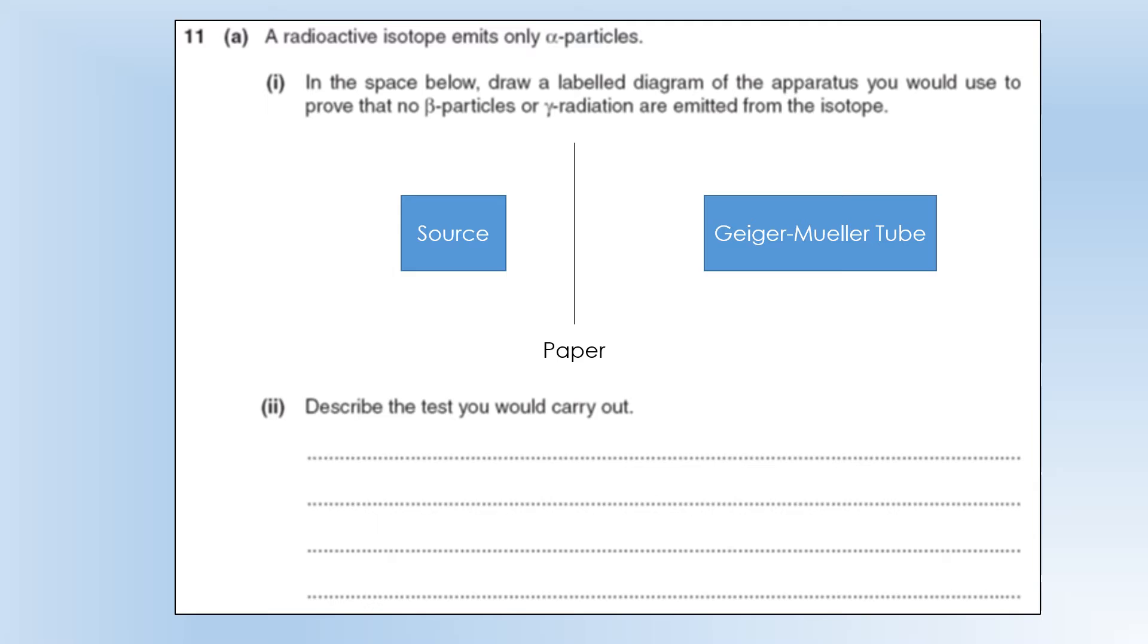So we've got our source, and we've got a piece of paper, and we've got a way of measuring it. So we've got a Geiger-Müller tube. So what we would do is, the first thing we'd do is we'd take a measurement with no source or barrier to get the background count rate. So we'd just stick the Geiger-Müller tube in the room to find out what the background count rate is.